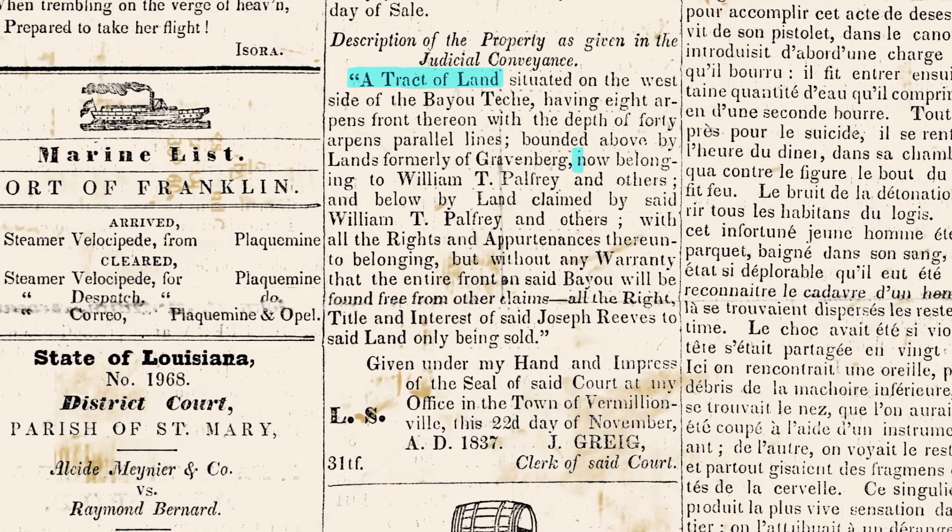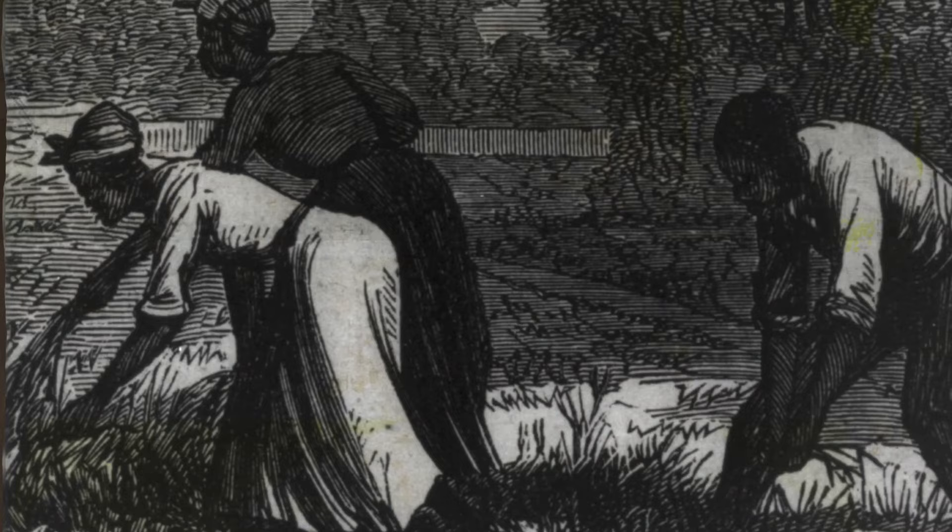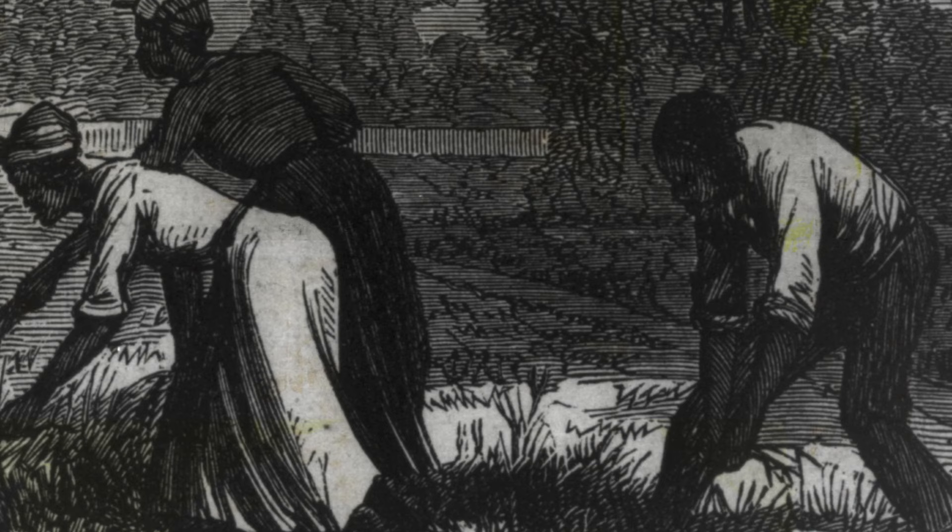Palfrey also purchases 21 people — men, women, and children — who he transplants to this new land in Atacapa. They turn a piece of wilderness into a cotton plantation. And it's the labor, the hands, the arms, the muscle, the know-how of those enslaved men, women, and children that make that land profitable.